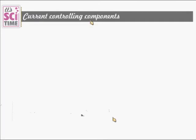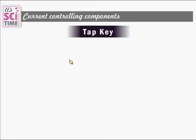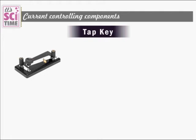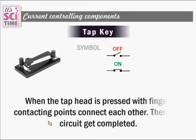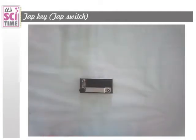Current controlling components — first component: the tap key. The tap key is a switch. Its symbol is shown here. When the tap head is pressed with the finger, the contacting points connect to each other and the circuit is completed. Watch this video to see the action of this tap key.